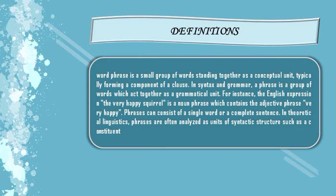Okay guys, I'm going to explain about the definition of the word phrase. What is a word phrase? A word phrase is a model group of words standing together as a conceptual unit, typically forming a component of a clause. In syntax and grammar, a phrase is a group of words which act together as a grammatical unit. For instance, the English expression 'the very happy squirrel' is a noun phrase which contains the adjective phrase 'very happy.' Phrases can consist of a single word or a complete sentence. In theoretical linguistics, phrases are often analyzed as a unit of syntactic structure such as a constituent.